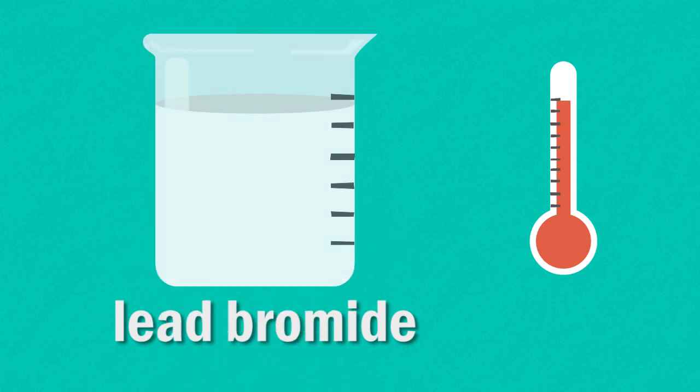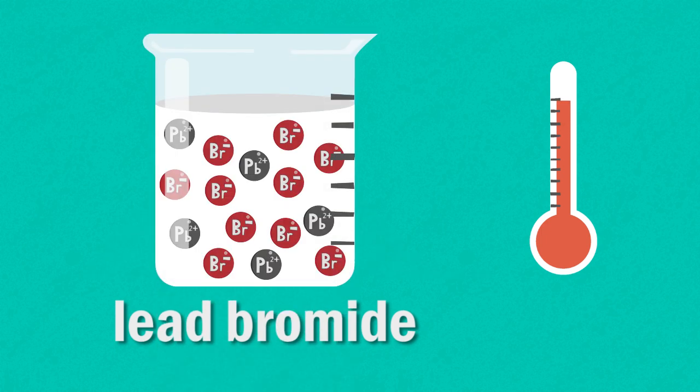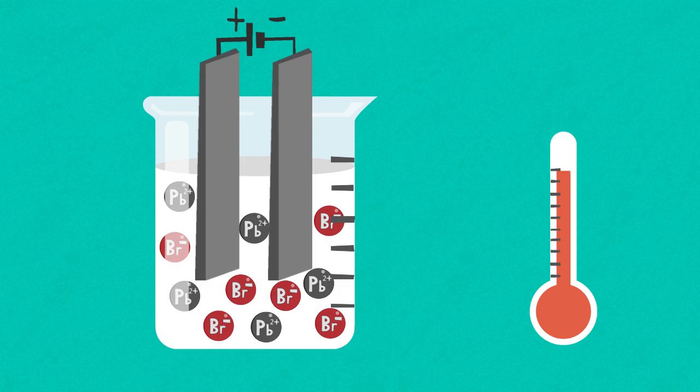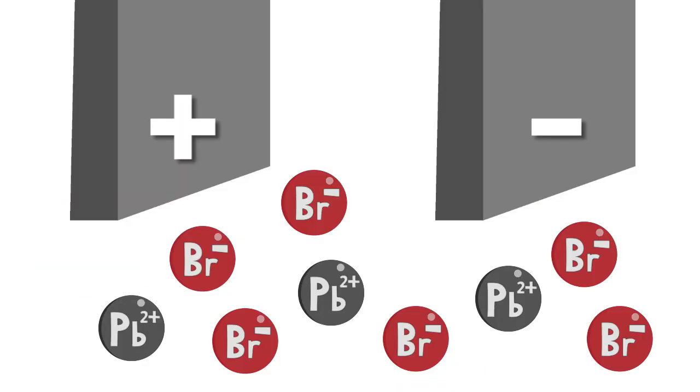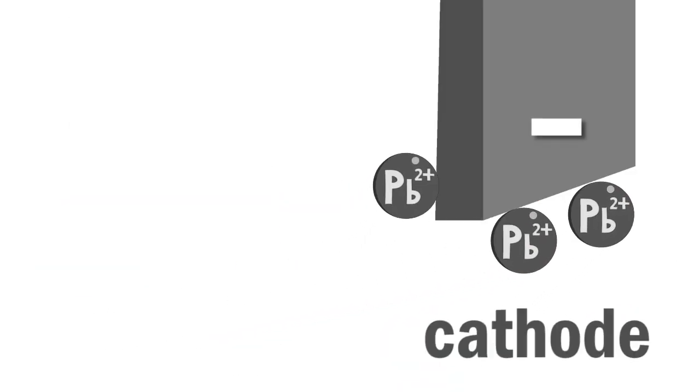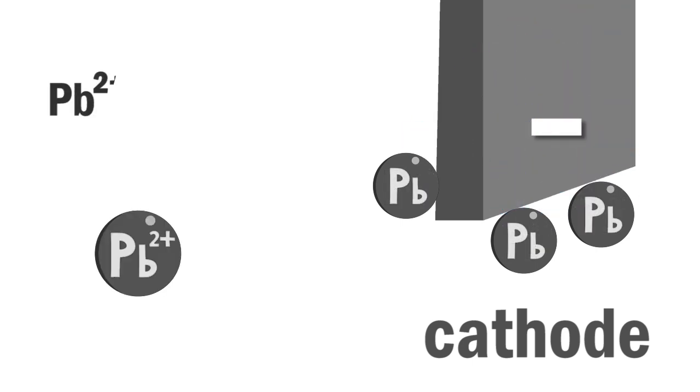But when it is heated and melts, it becomes an electrolyte. When the electrodes are connected to a DC power source, the lead cations will be attracted to the negative cathode, where they will gain electrons and become lead atoms. In this case, each cation requires two electrons to neutralise the 2 plus positive charge.